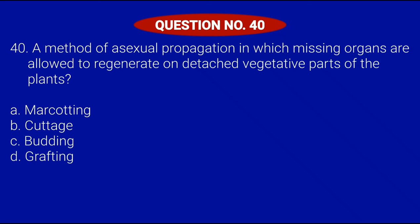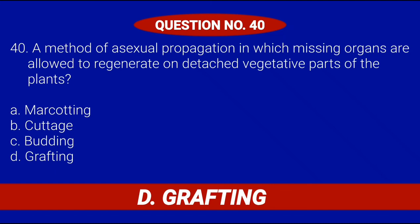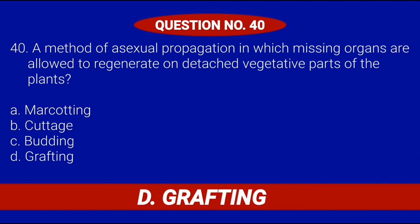Question number 40. A method of asexual propagation in which missing organs are allowed to regenerate on detached vegetative parts of the plants. Letter A, Marcotting; Letter B, Cutage; Letter C, Budding; or Letter D, Grafting. Correct answer is Letter D, Grafting.